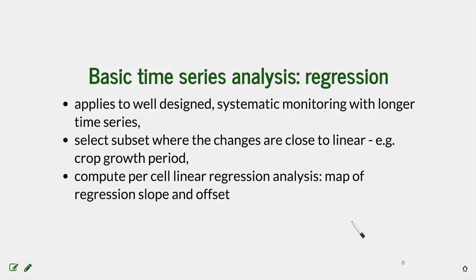If you have a well-designed time series monitoring campaign, you can do more sophisticated statistics. For example, you can extract a subset of your monitoring during a time period when changes are close to linear — such as a systematic crop growth period — and then compute per-cell linear regression. That way you can compute the rate of growth during the growing period across your field.